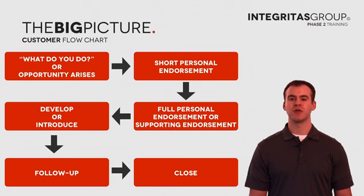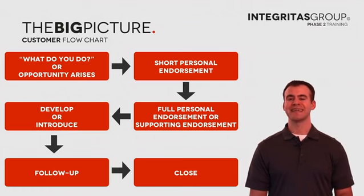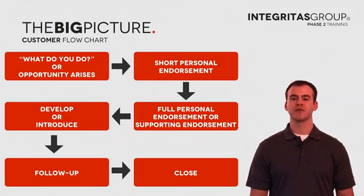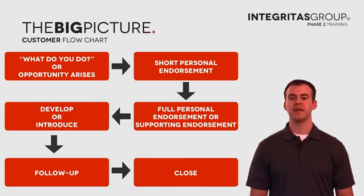Your full personal endorsement is like your entire product story, and a supporting endorsement would be the company founder's story or someone else's story in the company. Those first three steps are all part of the connect phase of the communication process. The connect step is where you're building the relationship with people and having a conversation. From there, you determine what information to show them about your company or product to lead them down that road, which brings us into the develop or introduce step where you start sharing information.